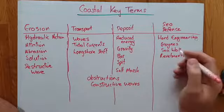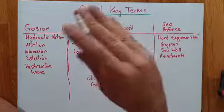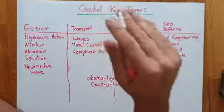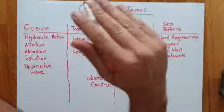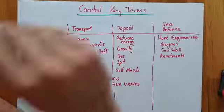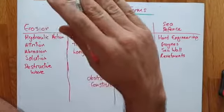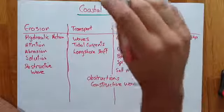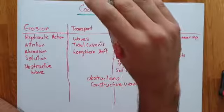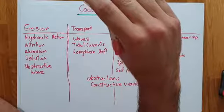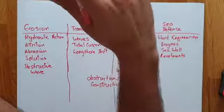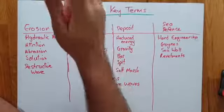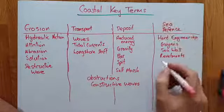Revetments — these are angled defenses on a slope. The wave comes and washes up them. Quite often you'll see them as steps, sometimes as slopes with gaps in between each step, and sometimes angled so the water washes off and the sediment falls behind them.